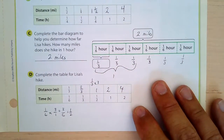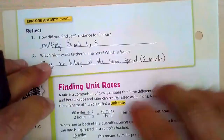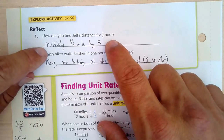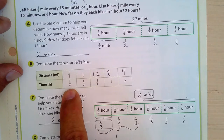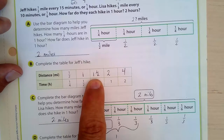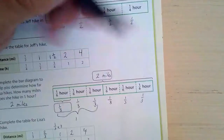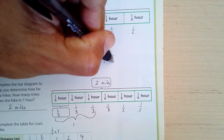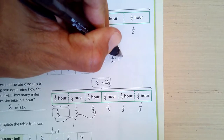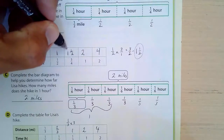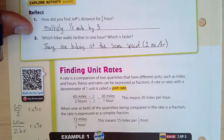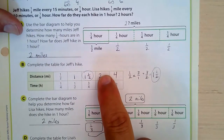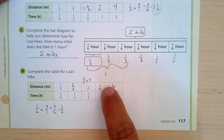How did we find Jeff's distance for three-quarters of an hour? We multiplied one-half mile by three, giving one and a half miles — which matches the table. Which hiker walks farther in an hour? They're the same: after one hour, Jeff has two miles and Lisa has two miles. So they're the same speed — each traveling two miles per hour.